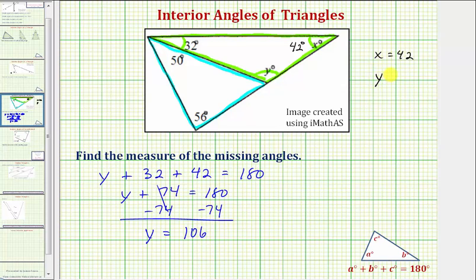So if y is equal to 106, we know the measure of this angle is 106 degrees. And notice the unit of degrees is already on x and y. So for our homework, we only enter x equals 42 and y equals 106. I hope you found this helpful.